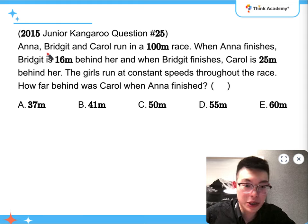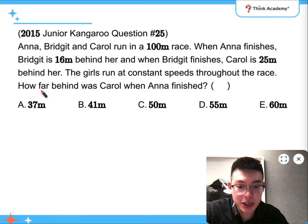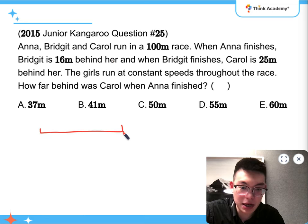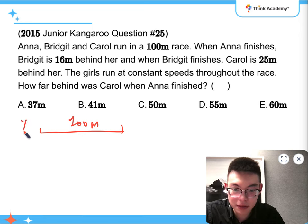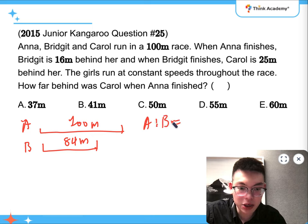And then the last question, I think this is a pretty common one. I've seen this question a hundred times already. Anna, Bridget and Carol run in a hundred meter race. When Anna finishes, Bridget is sixteen meters behind her. So it means that when Anna is doing a hundred meters, Bridget is doing eighty-four meters. So the speed of Anna to Bridget is equal to a hundred to eighty-four, which is twenty-five to twenty-one.